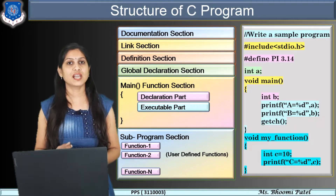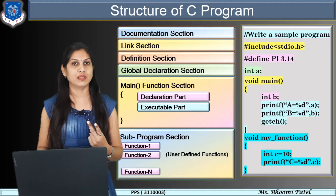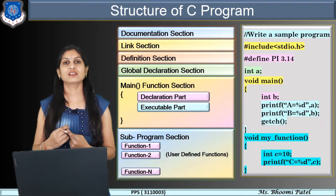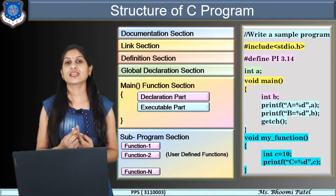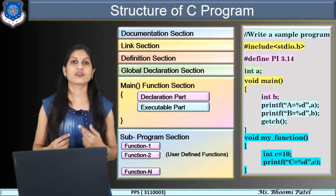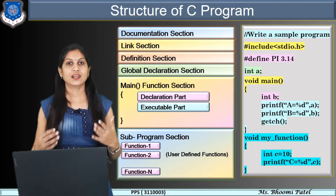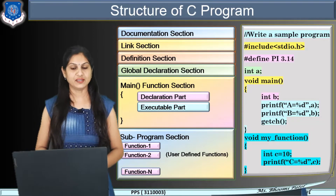Today we are continuing with two different problems. First, we have to find the area of a circle, and second, to convert the temperature from Fahrenheit to Celsius. Let's start how we can write these programs.